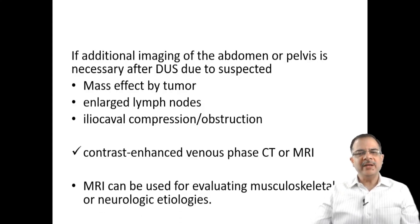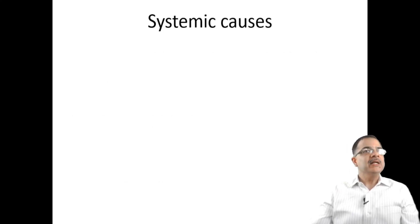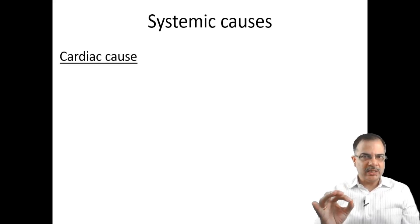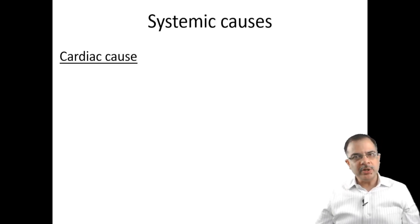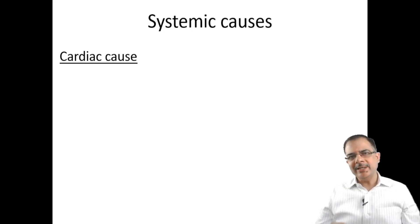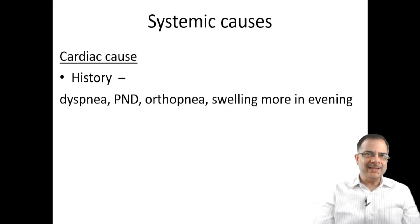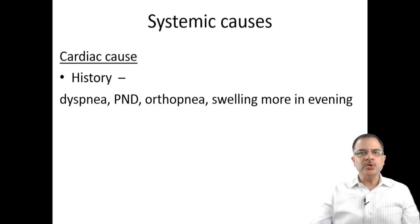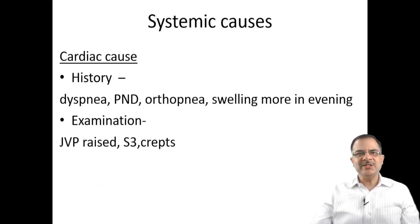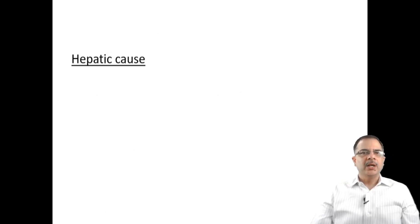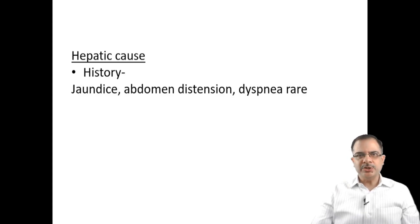MRI can also be done when evaluating musculoskeletal or neurological etiologies. The three important systemic causes are cardiac, liver, and renal — the treatment of swelling is to treat the underlying cause. For cardiac causes, history includes dyspnea, paroxysmal nocturnal dyspnea, and orthopnea. Swelling is more in the evening due to prolonged standing and less in the morning. Swelling is worse on dependent areas. Examination shows raised JVP, S3 sound, and crepitations. Lab test: elevated BNP.